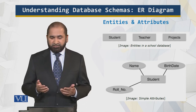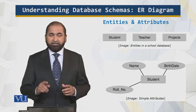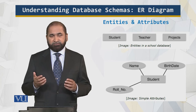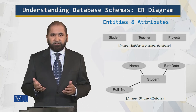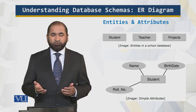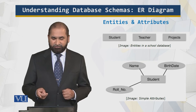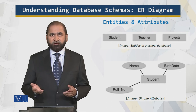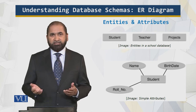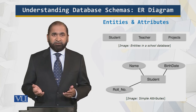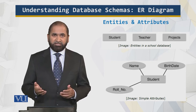So an entity is represented by a rectangle. As we can see over here, a student is represented by a rectangle. Now the entities have properties, which are the attributes. Those attributes are represented by an ellipse. So a student has a name, student has a birth date, student has a row number, employee has an employee ID, employee has a salary — which students usually don't have — and an employee has an email address and so on. So the attributes are represented by ellipse.